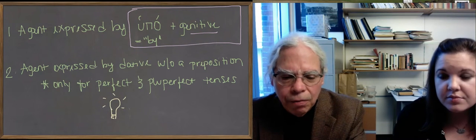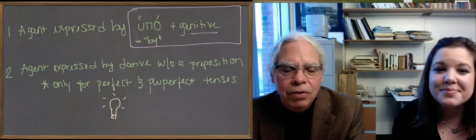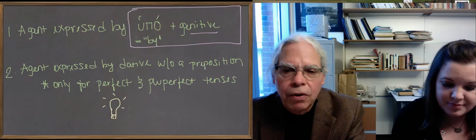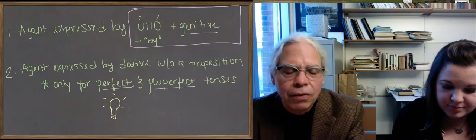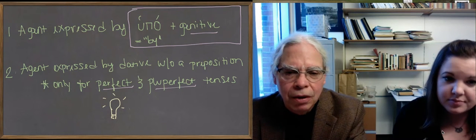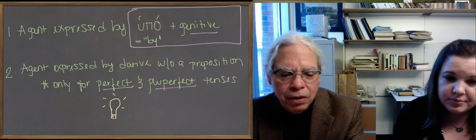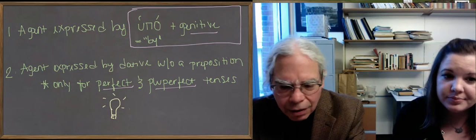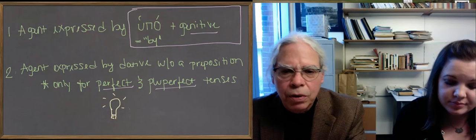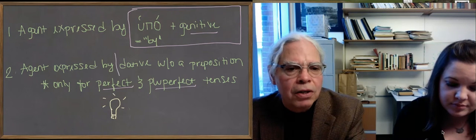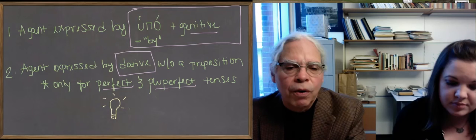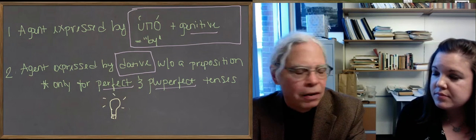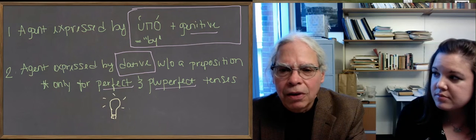But you have to remember one trick. And this is the big gotcha. That is, when the verb is perfect passive or pluperfect passive, those forms with the reduplication, the aspiration of the final consonant and the missing thematic vowel, then the agent is expressed by a simple dative case. There's no word for by. You just put the person in the dative. And you have to figure out what the heck that dative is doing.